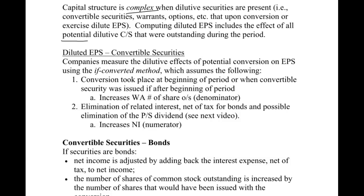We're going to compute dilutive earnings per share including the effect of all potential dilutive common stock. Basic earnings per share is your actual earnings per share — it's based on what actually happened during the year. Dilutive earnings per share is a 'what if': what if all the convertible bonds and preferred stock were converted, and what if all the stock options, warrants, and restricted stock were exercised? That increases our denominator, which dilutes earnings per share. So dilutive EPS is just hypothetical.